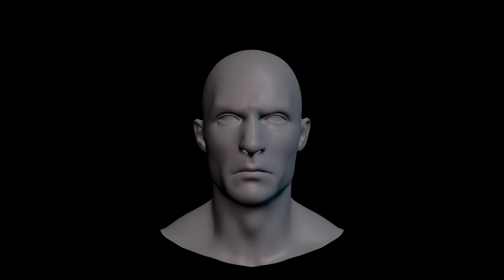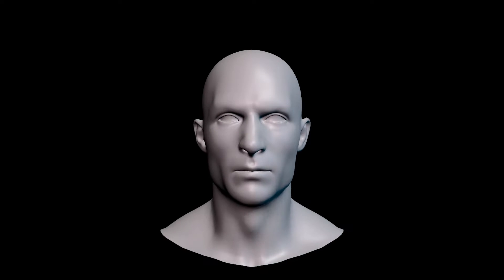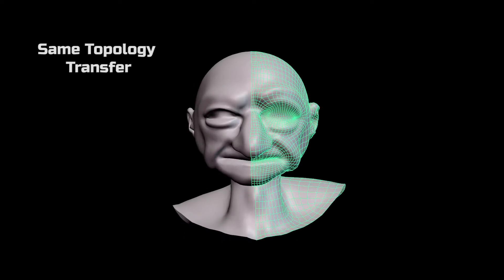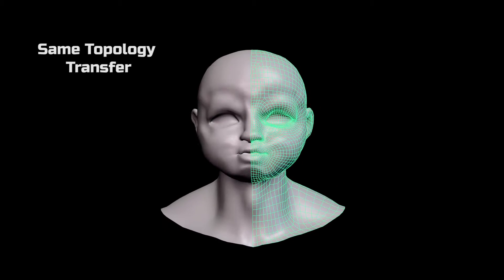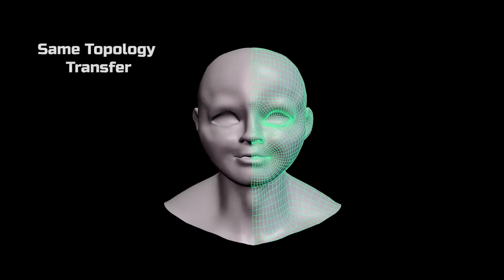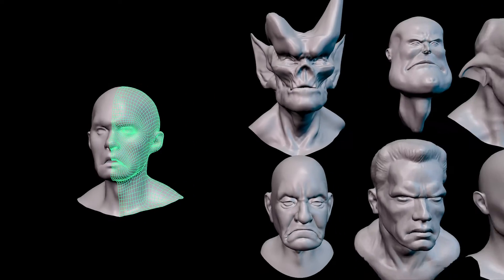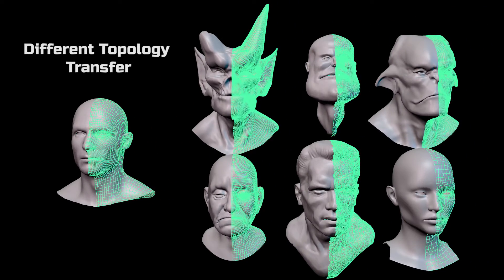Blend shapes are one of the most common forms of facial rigging but require a wealth of expensive artistic talent. But what if we had a one button solution to transfer these shapes to another character of the same topology? Now what if we had that same button to transfer these shapes to characters of different topology?